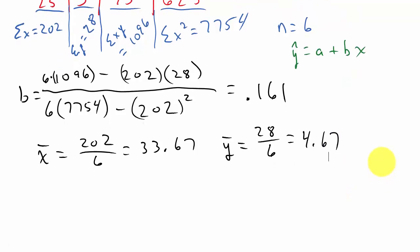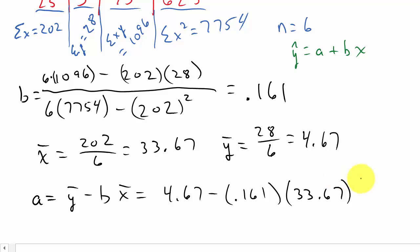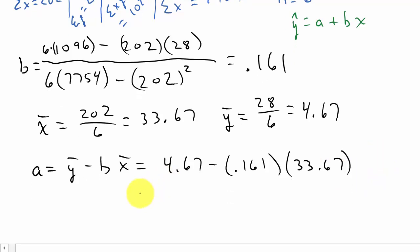What is a? A is y bar minus b times x bar. That's going to be 4.67 minus b, which is 0.161, times x bar, 33.67. We punch this into our calculator and we get a equals negative 0.751.